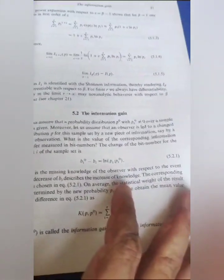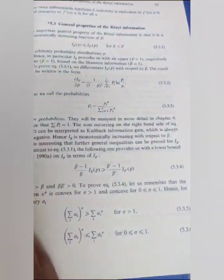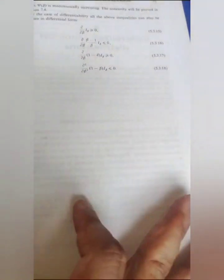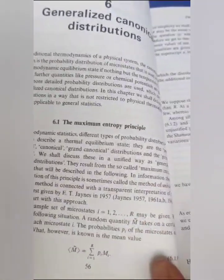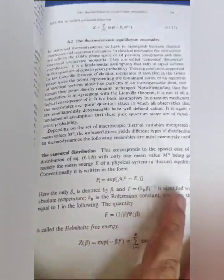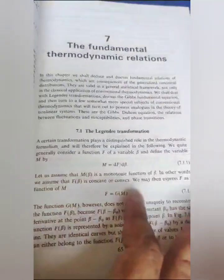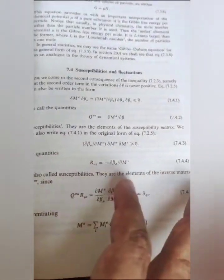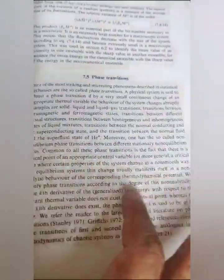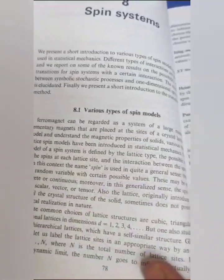Also covered are expansion rate and information loss, the topological pressure, transfer operator, and escape rate. The more advanced chapters deal with the thermodynamic formalism for expanding maps, thermodynamic analysis of chaotic systems with several intensive parameters, and phase transitions in nonlinear dynamics.